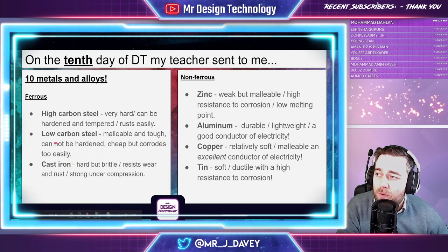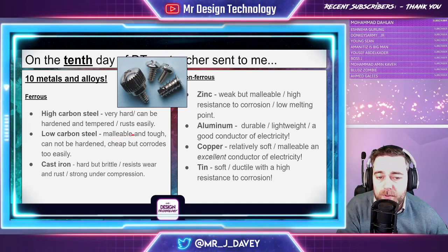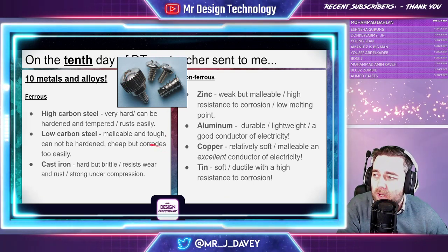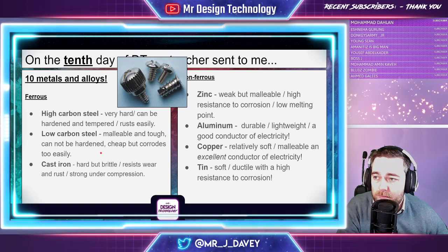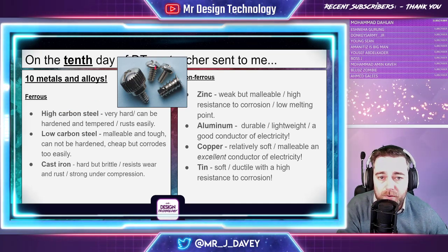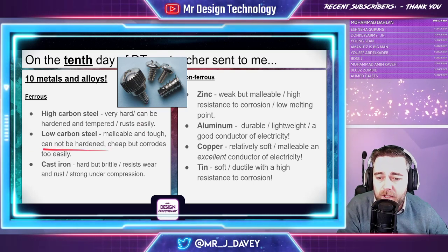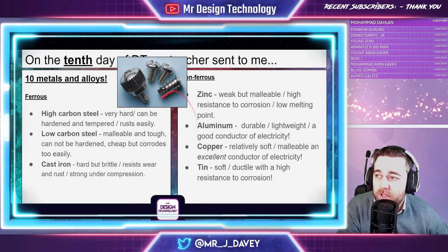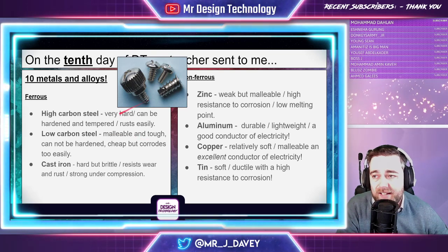Low carbon steel covers things like bolts and screws. They're malleable — we can shape them easily, add threads, and mark them for screwdrivers. They're tough, which is needed to hold things in place. They can't be hardened, which is actually desirable — you don't want a bolt harder than the screwdriver. They're cheap, but they do corrode too easily, which is a negative.